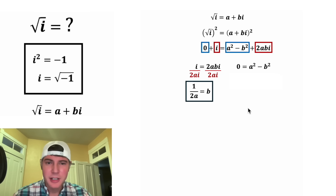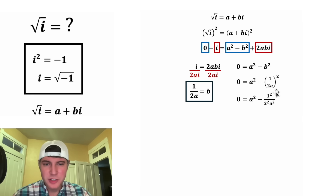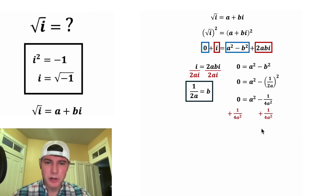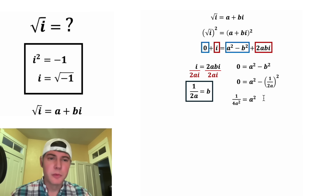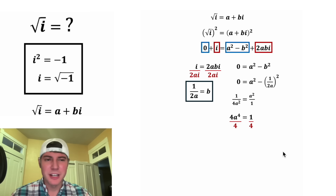Now let's go to the other equation. In the place of b, let's substitute 1 over 2a. The squared distributes to the 1, the 2, and the a: 1 squared is 1 and 2 squared is 4, giving us 1 over 4a squared. We can add 1 over 4a squared to both sides, leaving a squared on the right. Rewriting a squared as a squared over 1 and cross-multiplying gives us 4a to the fourth equals 1. Dividing both sides by 4 gives a to the fourth power equals 1 fourth.